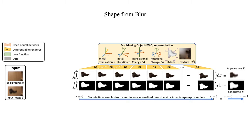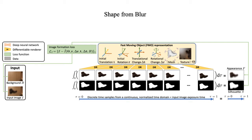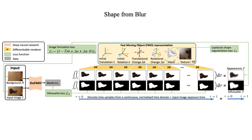All 3D object parameters are jointly estimated via an optimization. The main objective is the image formation loss, which forces all model parameters with the corresponding motion-blurred object projections to best explain the input image. To avoid local minima, we apply additional regularizers, such as silhouette consistency loss, Laplacian shape regularization, and texture smoothness loss.